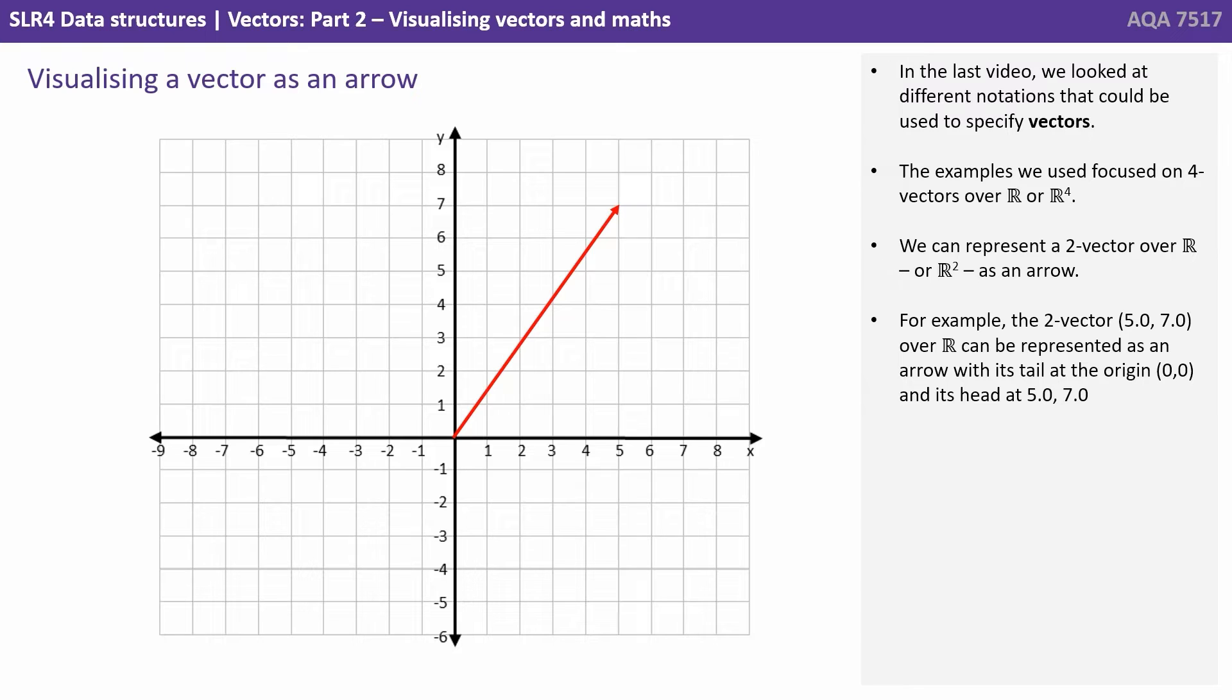We can represent a two vector over R as an arrow. For example, the two vector (5.0, 7.0) over R can be represented as an arrow with its tail at the origin (0, 0) and its head at (5, 7).